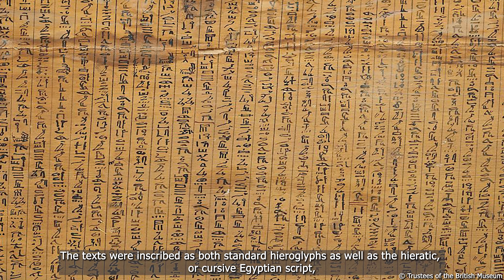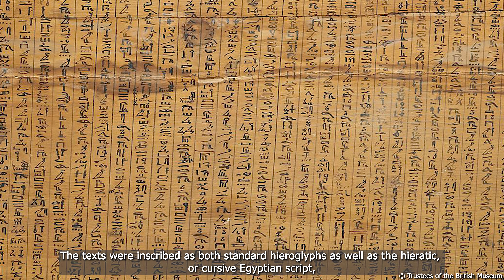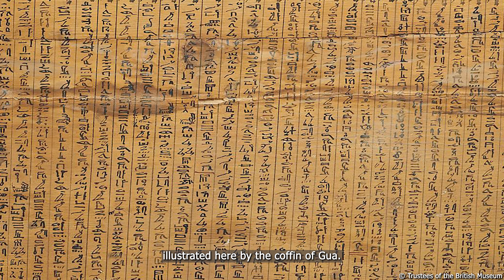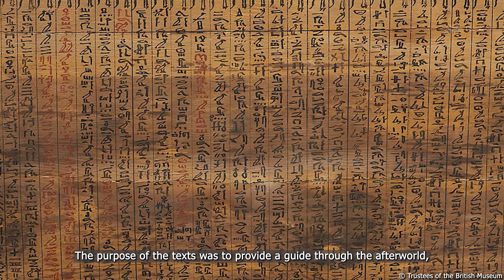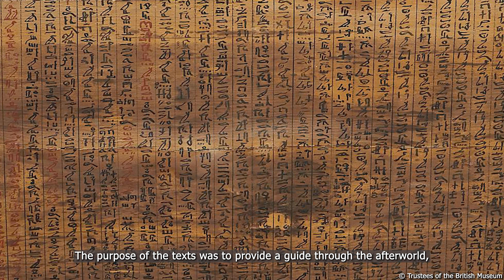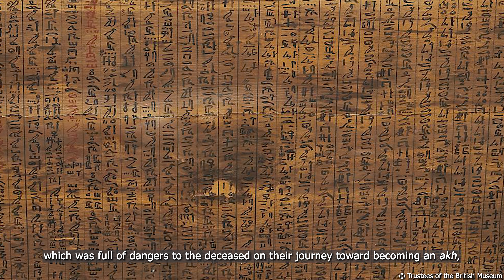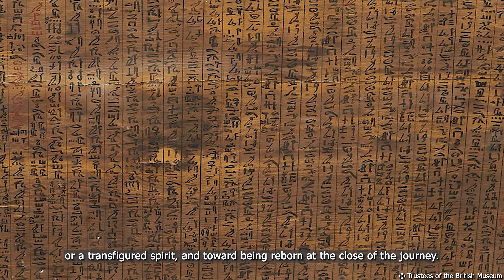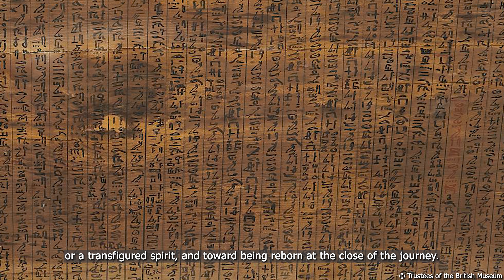The texts were inscribed as both standard hieroglyphs as well as the hieratic, or cursive Egyptian script, illustrated here by the coffin of Dua. The purpose of the texts was to provide a guide through the afterworld, which was full of dangers to the deceased on their journey toward becoming an Akh — a transfigured spirit — and toward being reborn at the close of the journey.